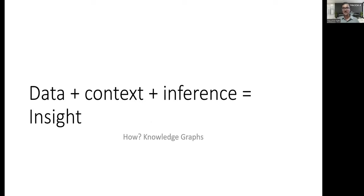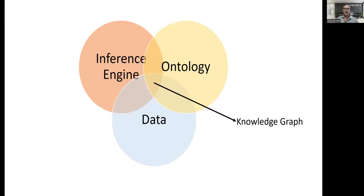Moving to the third part: how? How do we go from data, build context, and do inference to get insights? To build a knowledge graph you need three important pieces: one is ontology, another is an inference engine, and obviously the third is data. I will concentrate on the ontology part, which is probably the most important.